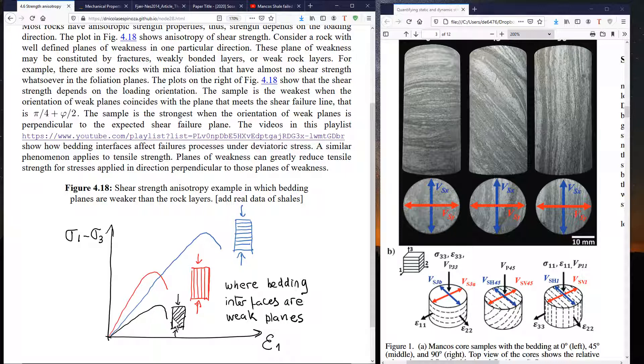The strength of the rock, that's going to be the maximum stress, is going to depend also on the bonding between each of these layers. For example, in this particular schematic, we are assuming that bedding interfaces are weak planes. In such case,